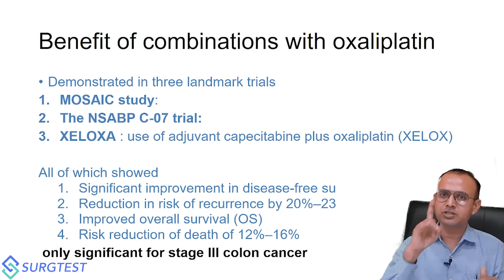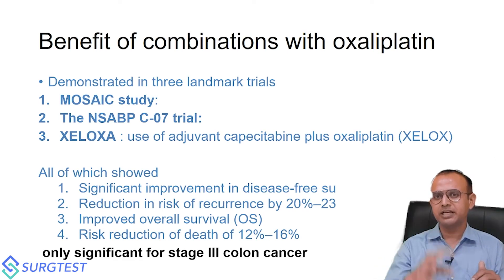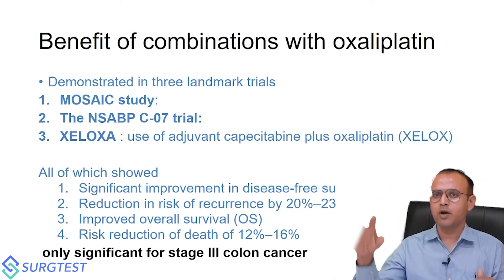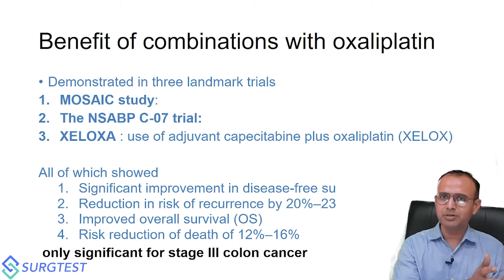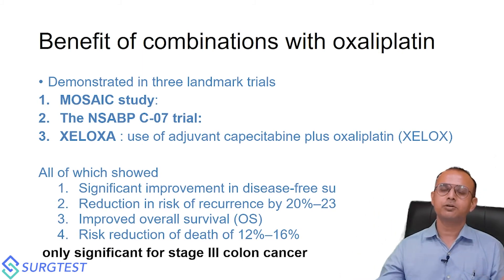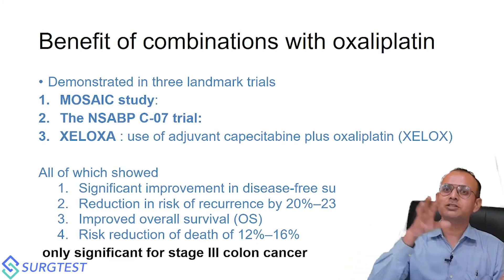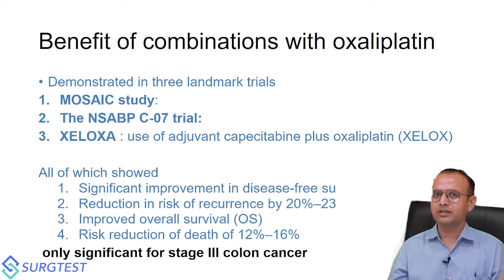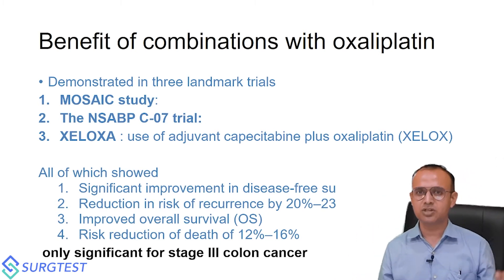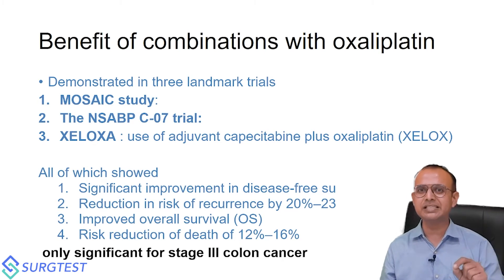However, this benefit is only significant for stage three. For stage two high-risk or low-risk patients with MSI stable who need chemotherapy, should we use capecitabine alone or FOLFOX with oxaliplatin? In stage two disease, oxaliplatin should be avoided because it carries a set of major side effects and does not add benefit in stage two. Oxaliplatin is indicated in stage three.